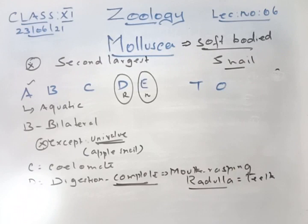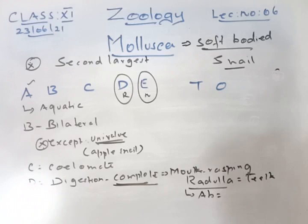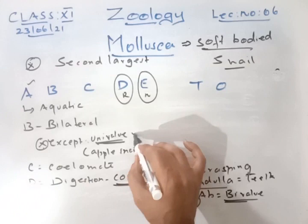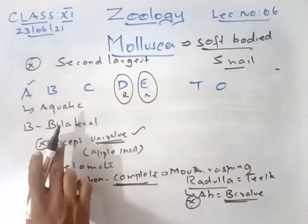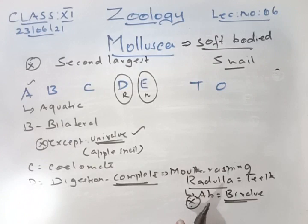The radula is absent in bivalves but present in univalves like apple snail. All organisms in Mollusca show bilateral symmetry except univalves.